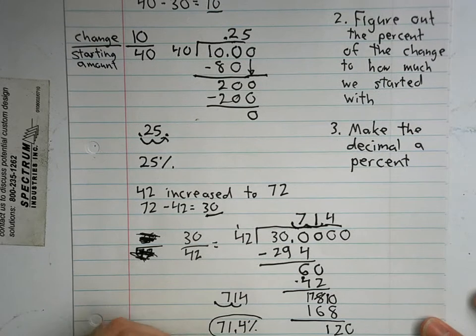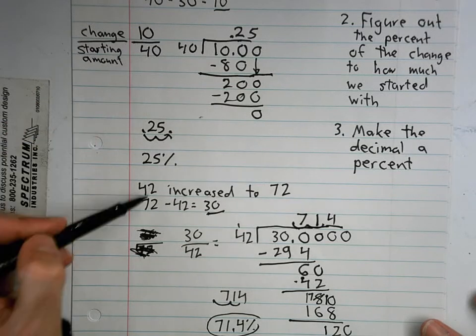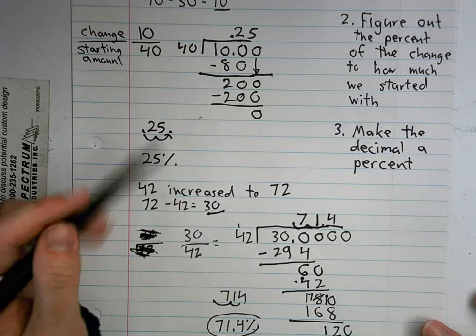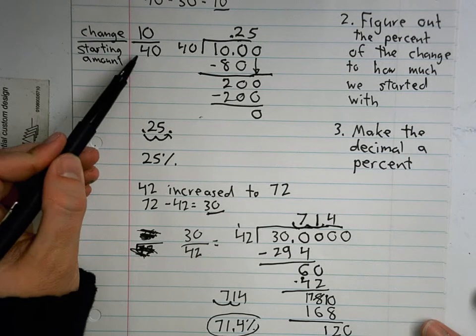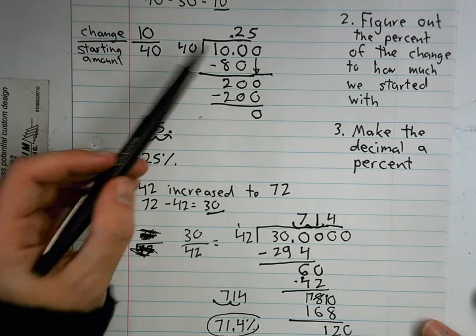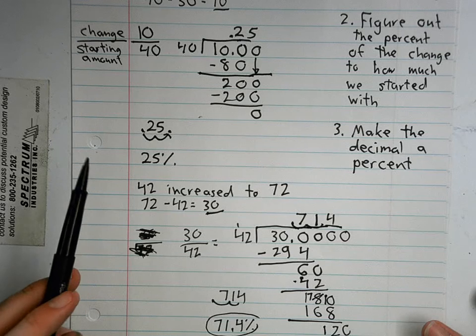The key is, you figure out how much it changed using a subtraction sentence. Then you set up your ratio, your fraction, with how much it changed over how much you started with. Then you divide. When you divide, you'll get a decimal. Move the decimal over twice. That's how we calculate the percent of change.